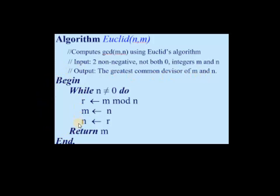Here the algorithm uses a while loop to repeat certain instructions. In Euclid's algorithm, three mathematical operations are performed repeatedly. First, divide the first number M by the second number N to get the remainder. Then first number becomes second number — M equals N. Second number becomes the remainder. These three mathematical operations you have to do repeatedly.